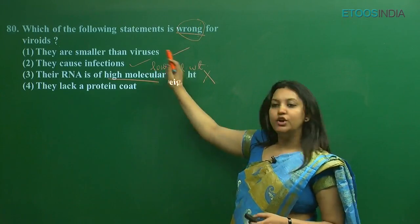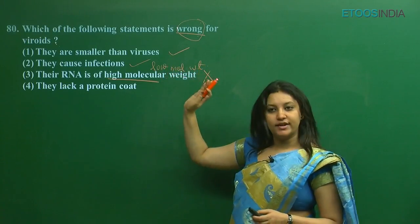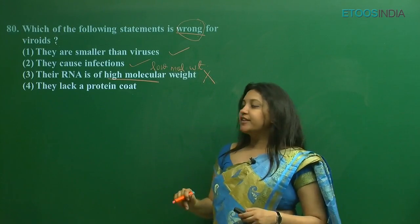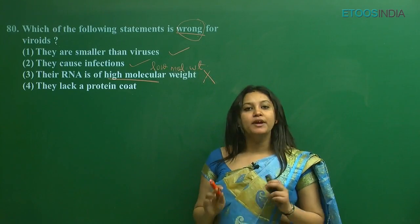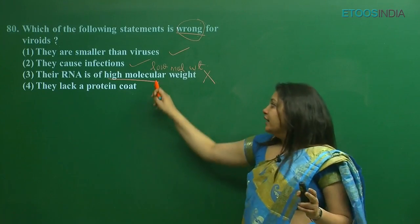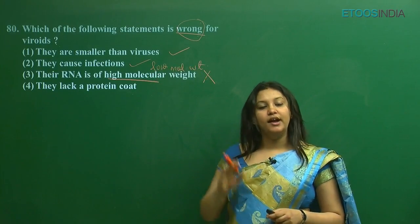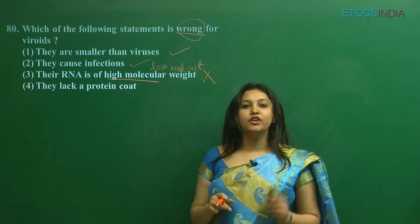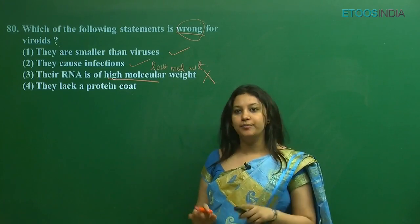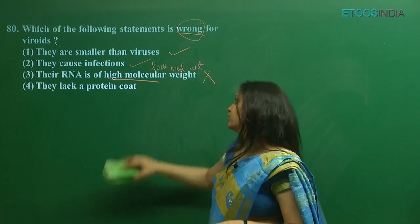The first, second, and fourth statements are all correct: viroids are smaller than viruses, they can cause infection, and they also have an absent protein coat. The third statement is the incorrect one because the RNA molecular weight is not high — it is low. That is why third is the correct option regarding this question.